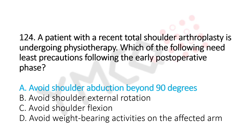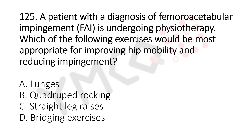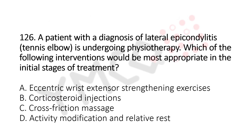Now let's move to question number 125. A patient with a diagnosis of femoroacetabular impingement is undergoing physiotherapy. Which of the following exercises would be the most appropriate in the initial stages of treatment for improving hip mobility and reducing impingement? Option A: lunges. Option B: quadruped rocking. Option C: straight leg raises. Option D: bridging exercises. The answer is option B: quadruped rocking.